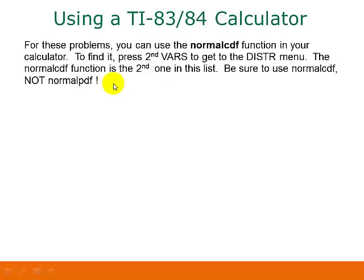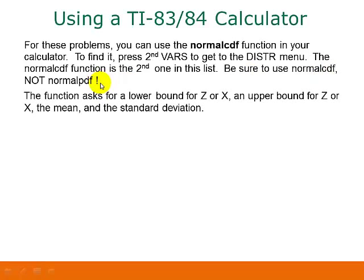The normalcdf function is the second one in the list. And here you have to be very careful to use normalcdf, not normalpdf. The function will ask you for a lower bound for either z or x, an upper bound for z or x, the mean and the standard deviation.